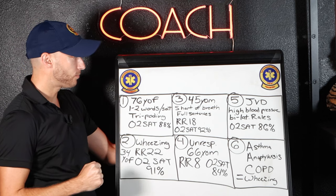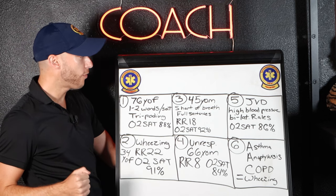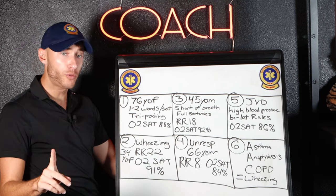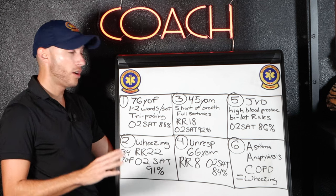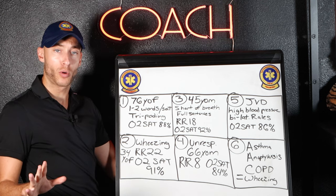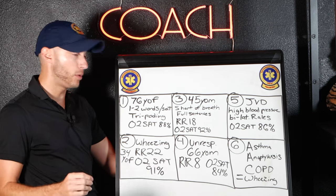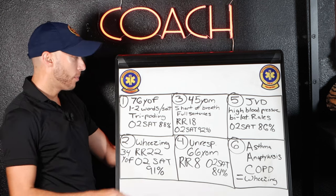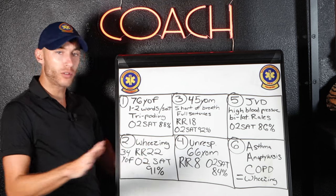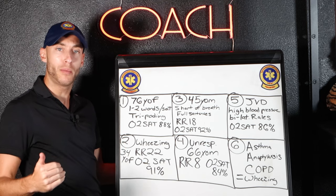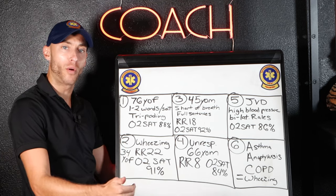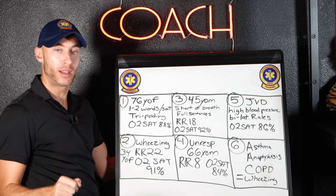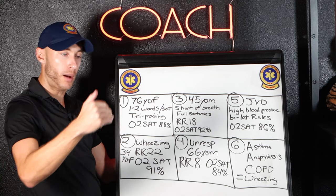Number three: a 45-year-old male with shortness of breath, speaks in full sentences, normal respiratory rate of 18 — we know 12 to 20 is normal — but the O2 sat is a little low at 92%. We need to get them above 94%. Nasal cannula.